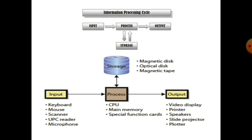Next is the output device. Output devices are those devices which are used to give output or information to the user. Examples include window display, printer, speakers, slide projector, and plotter. These are examples of output devices, and there are many more.